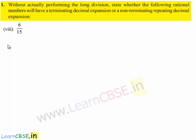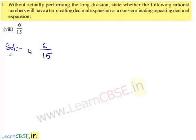Let us move on to the eighth bit of the question. The given rational number is 6 upon 15. We need to check whether the given rational number has a terminating decimal expansion or a non-terminating repeating decimal expansion. For that, first we shall simplify the given rational number. Since 6 and 15 are multiples of 3, we have 6 by 15 is equal to 2 by 5.